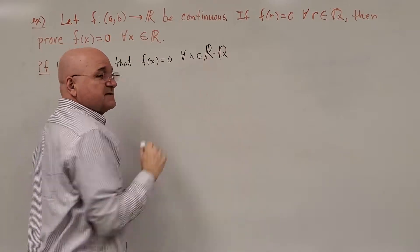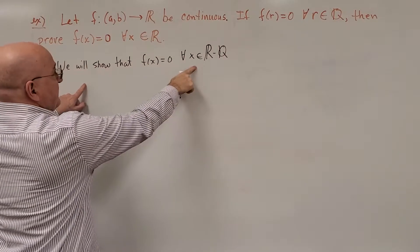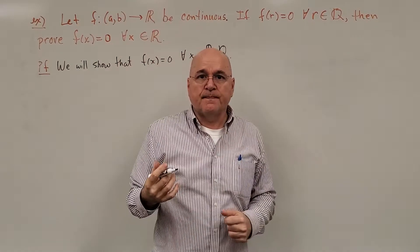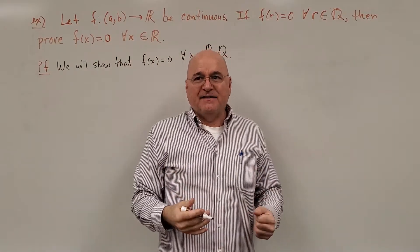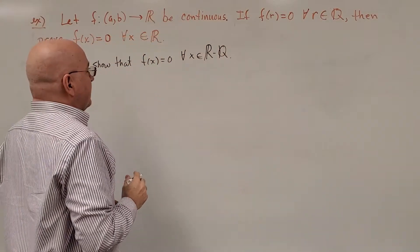that f(x) = 0 for all x in the irrational numbers, which I write as R \ Q. In order to show that for all of these irrational numbers, we can just choose an arbitrary one and show it's true for that. And the fact that we chose it arbitrarily means it would be true for all of the irrationals.